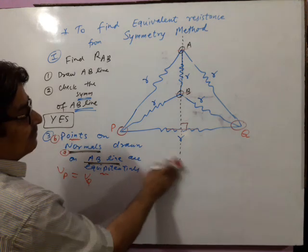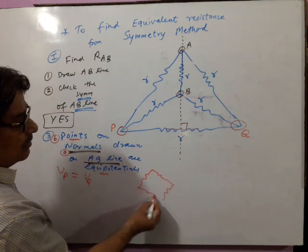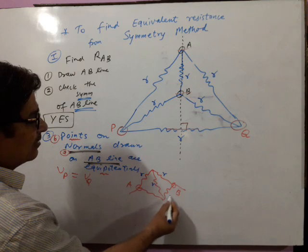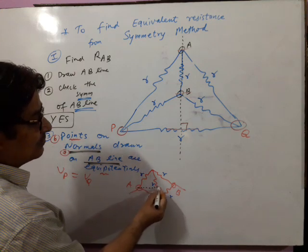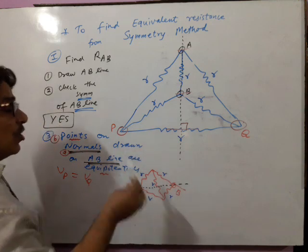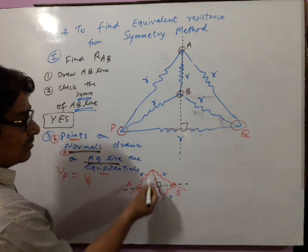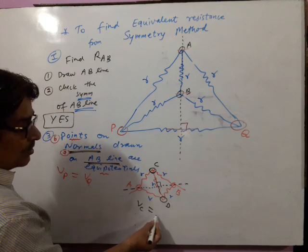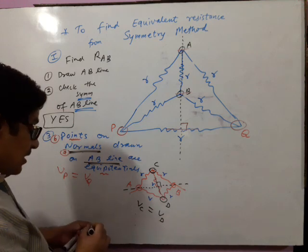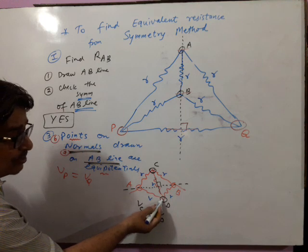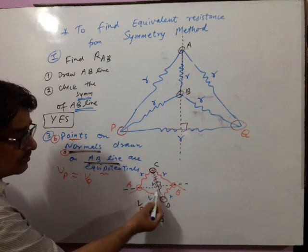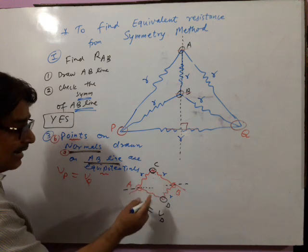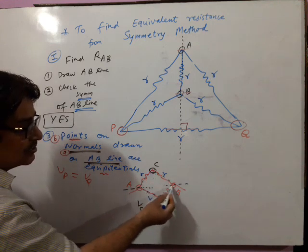In this Wheatstone bridge numerical, the same question but a smaller one — find equivalent resistance between A and B. Draw the AB line, then draw normals to AB line. There is only one normal to AB line. Points C and D are verified by symmetry technique to have the same potential — you know this from Wheatstone bridge principle or Kirchhoff's laws. Since C and D have the same potential, this resistance will not work. Whether it is connected or disconnected makes no difference, so disconnect it. These two resistances are in series, these two are in series, and now both are in parallel.